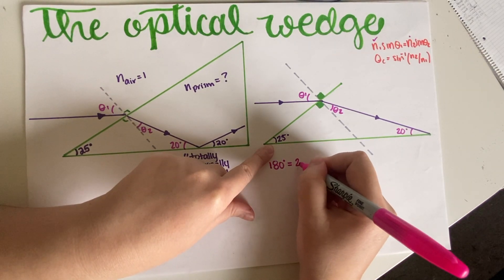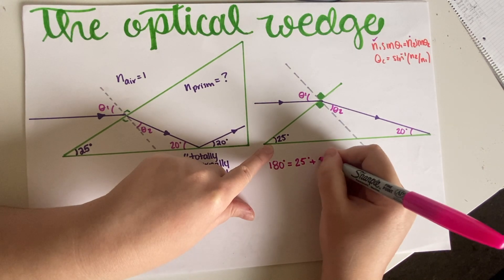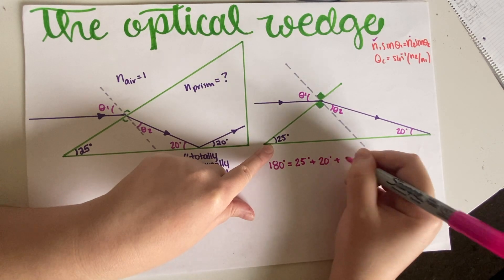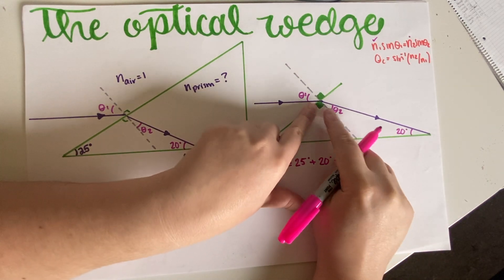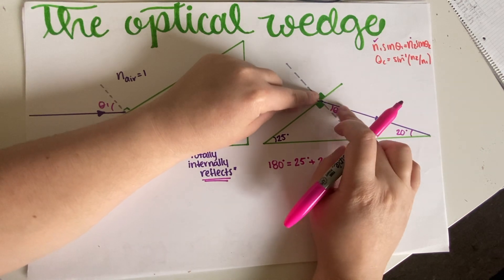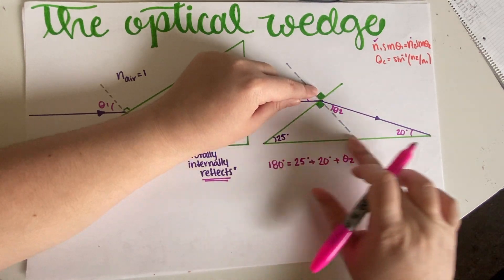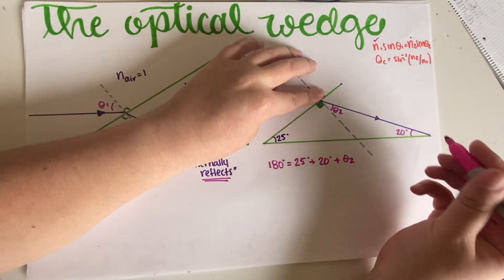So let's see: 180 degrees has to be equal to all of these angles, including this 90 degrees. You do have to include the 90 degrees. So this is equal to 25 plus 20 plus this angle, which is what I'm looking for, and then also this 90 degrees. Again, you do have to include this 90 because it's the complement of this guy and it's what makes this triangle, the big triangle we're working with.